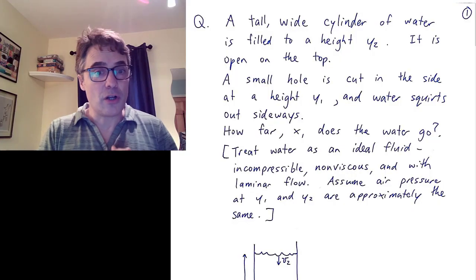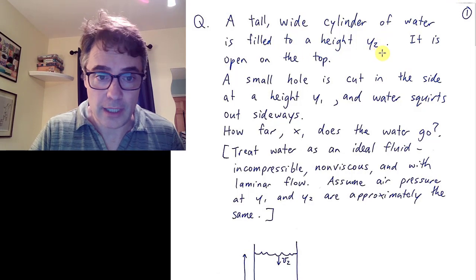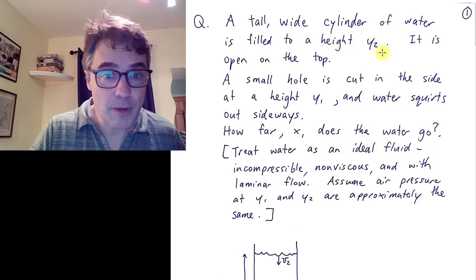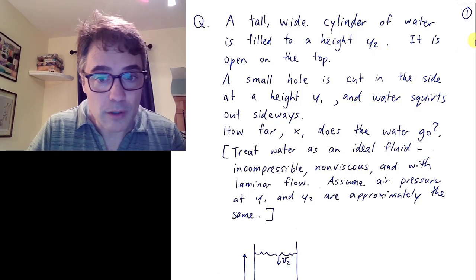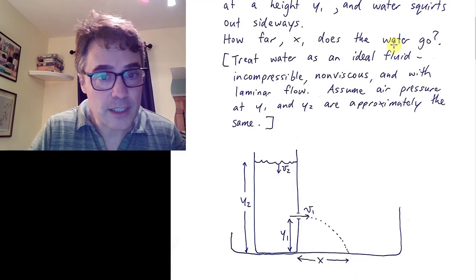For the experiments this week, I actually want to do a little experiment involving fluid flow. It's based on this problem. A tall, wide cylinder of water is filled to a height y2. It is open at the top. A small hole is cut in the side at height y1, and water squirts out sideways. And there's a picture here. How far x does the water go?